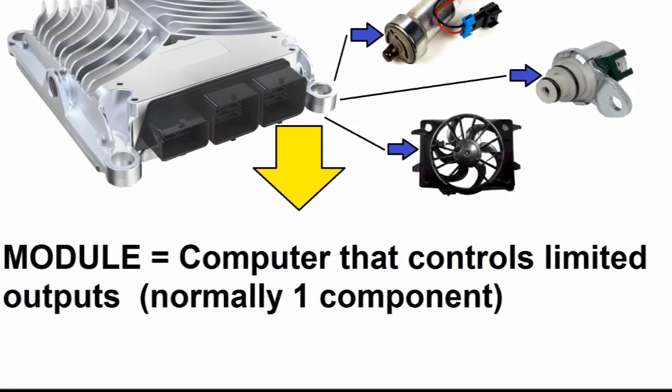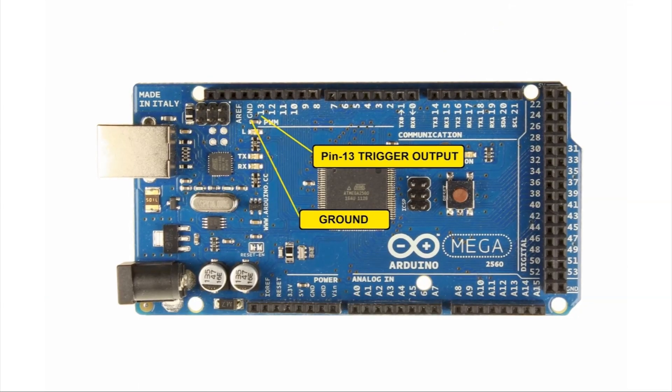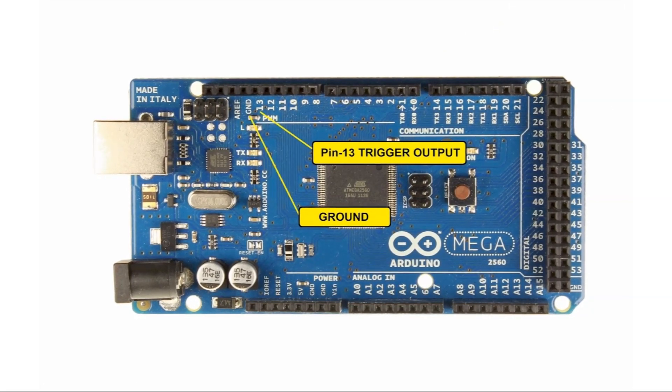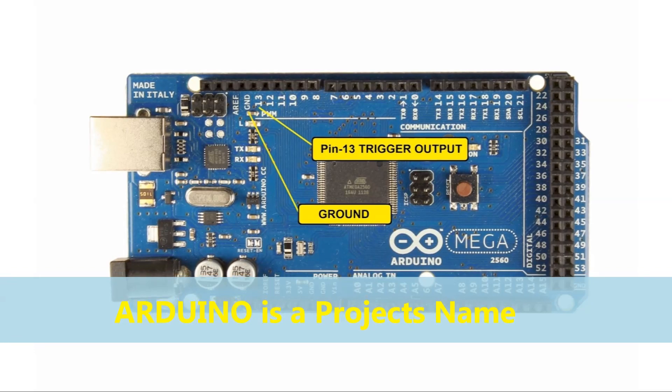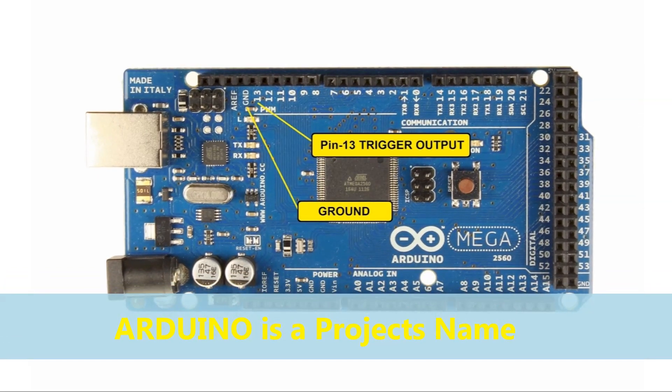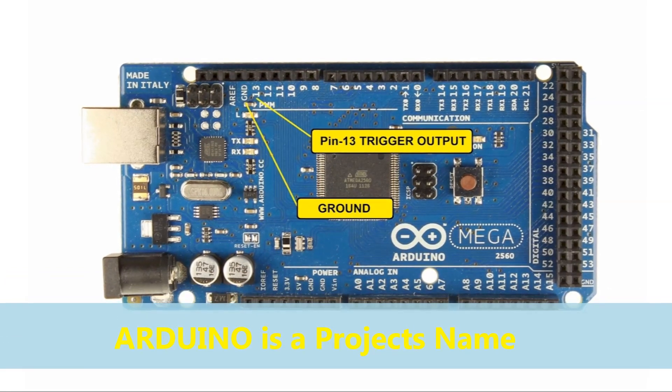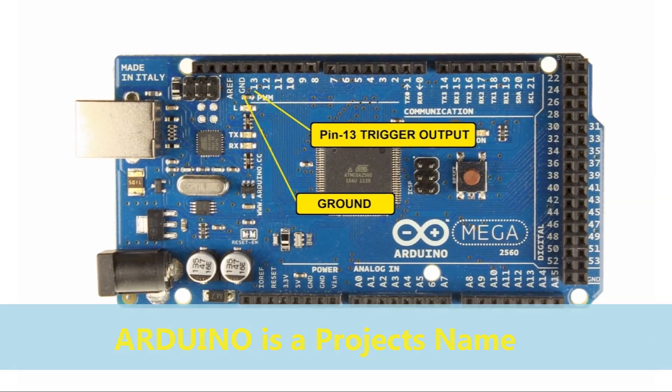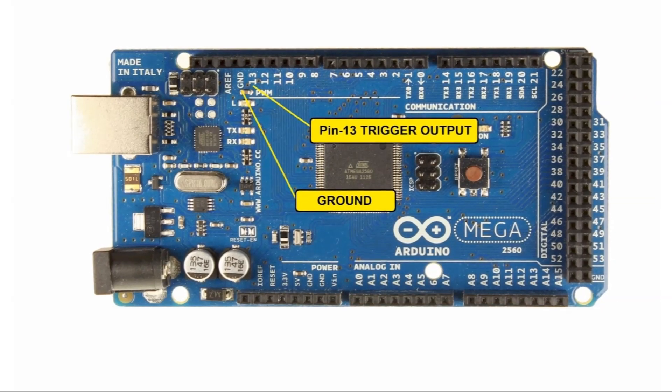In this video, we're going to use an Arduino module board. Since this is almost a computer, it has multiple inputs and outputs, but in this particular case, we're just going to use one. We're going to control a motor, a small motor, which represents a radiator fan.